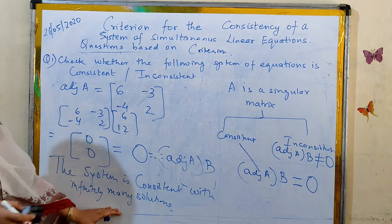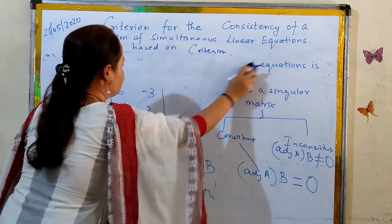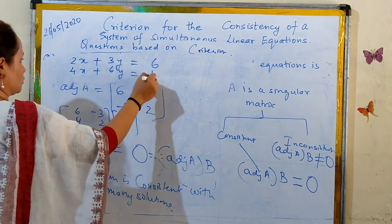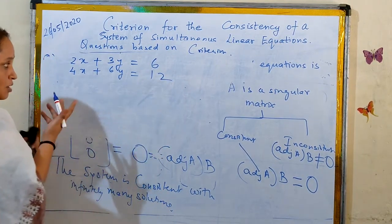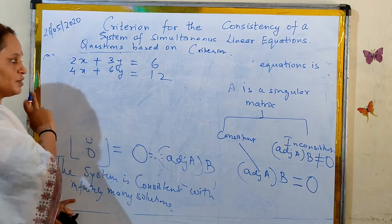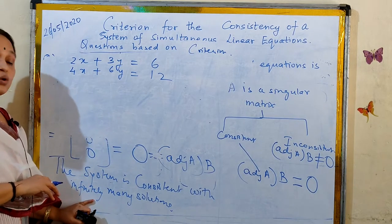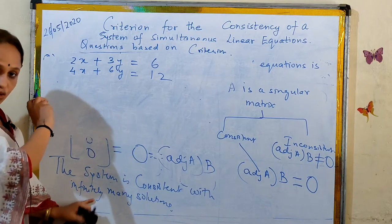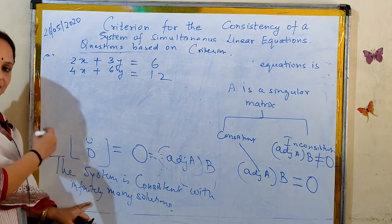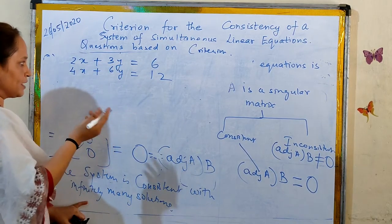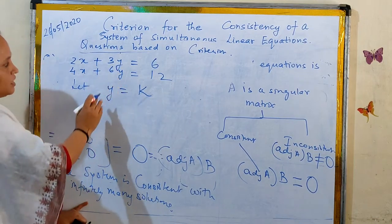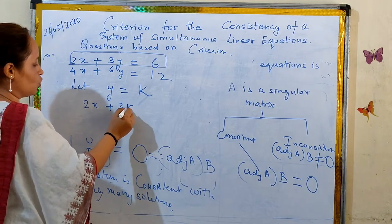For understanding purposes only, let's see how to find the infinitely many solutions. We assume y equals any real number k. From the first equation 2x plus 3y = 6, substituting y = k gives 2x = 6 minus 3k, so x = (6 minus 3k) divided by 2. This gives us x in terms of k.